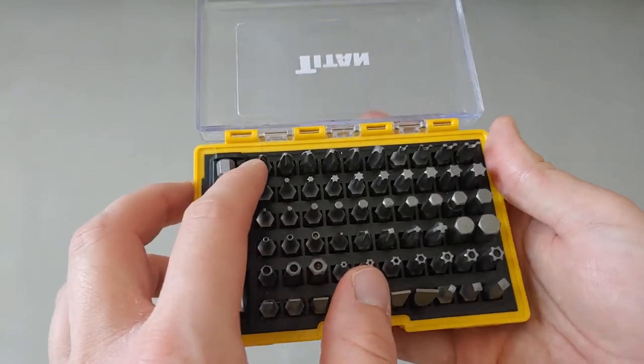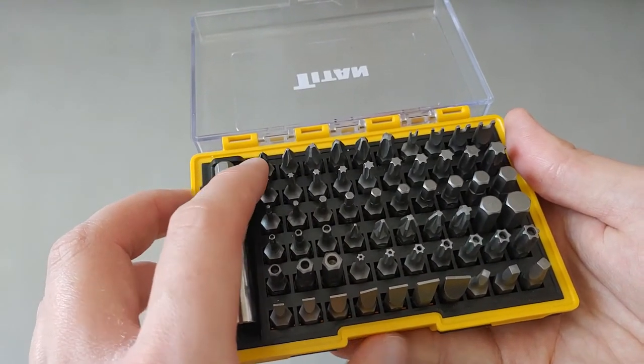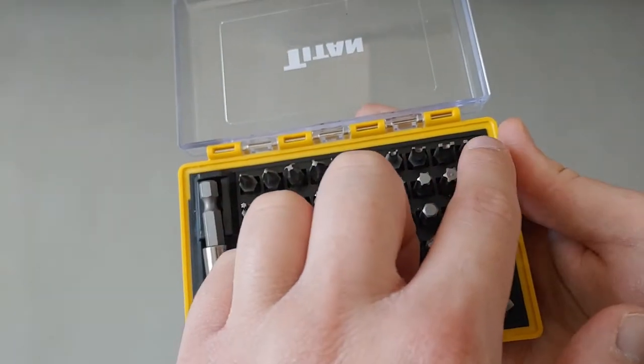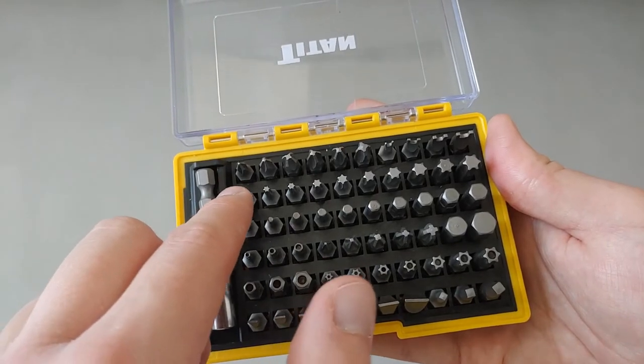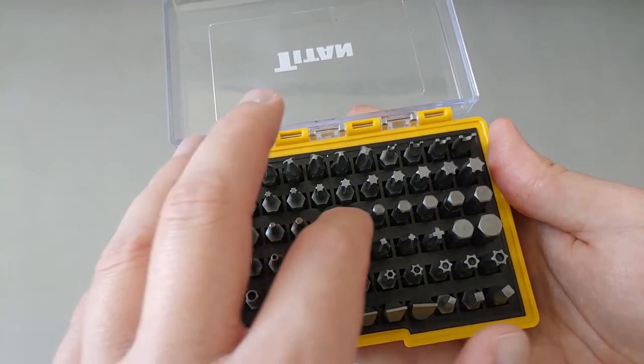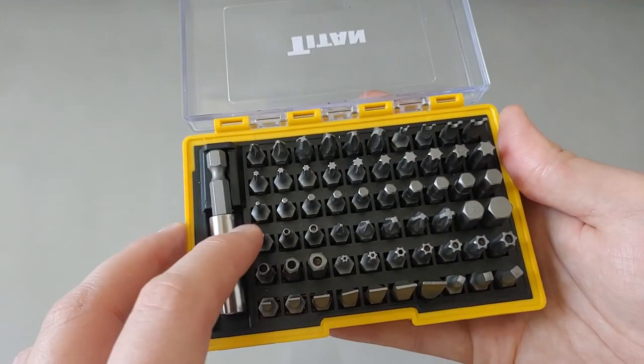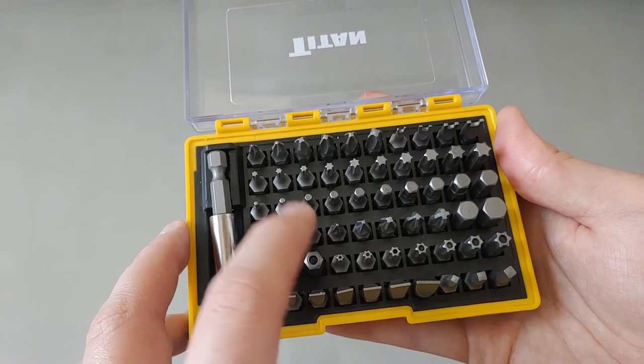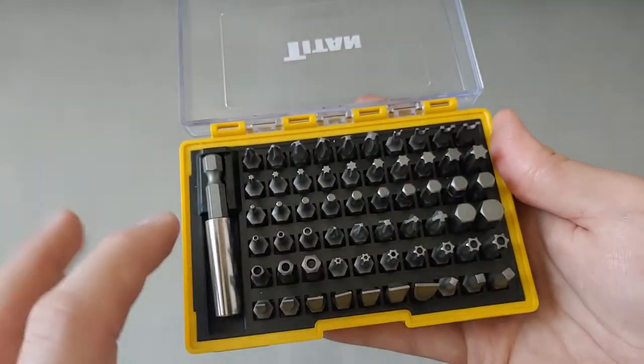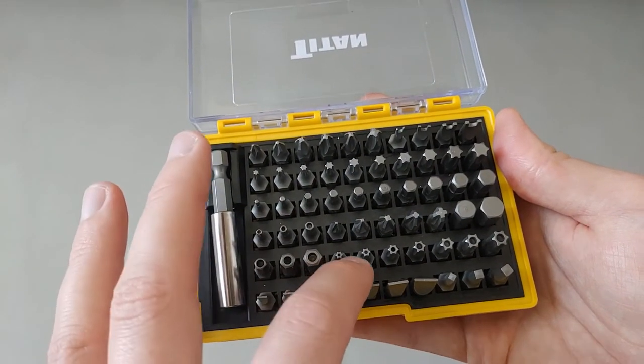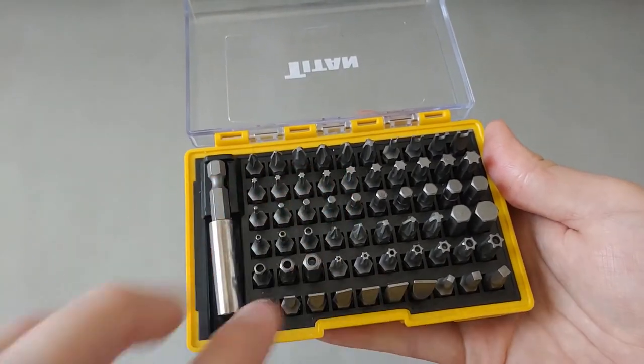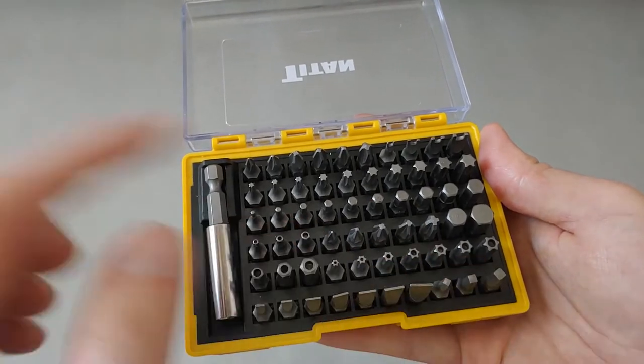Let's go ahead and show you the bits. Right here we can see in the first row these are Philips, then you have your spanner bits, these are your torx bits (regular torx), then your hex bits. Then you have your security hex, these are your posi drive bits, and these are your bigger regular hex bits. Then security hex, security torx, these are your slotted bits in Imperial or SAE sizes, and finally you have your square bits.